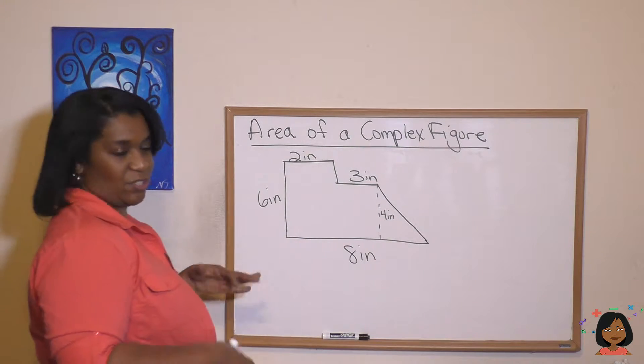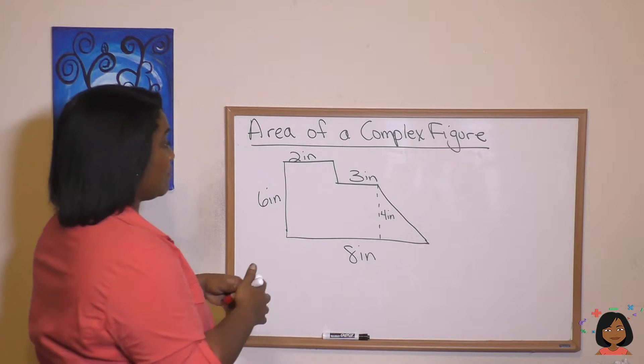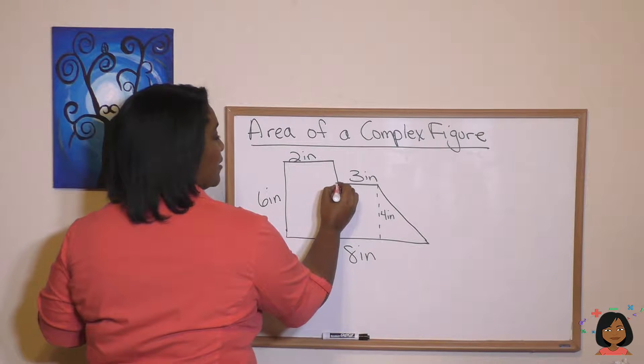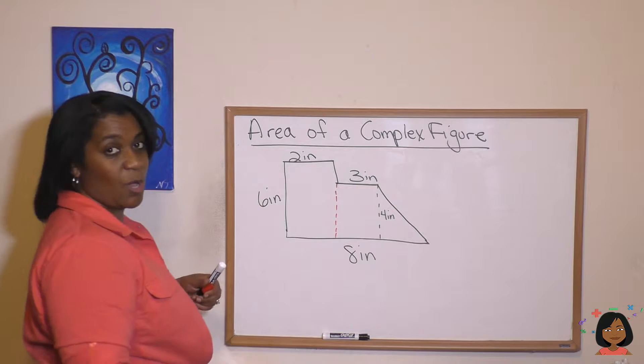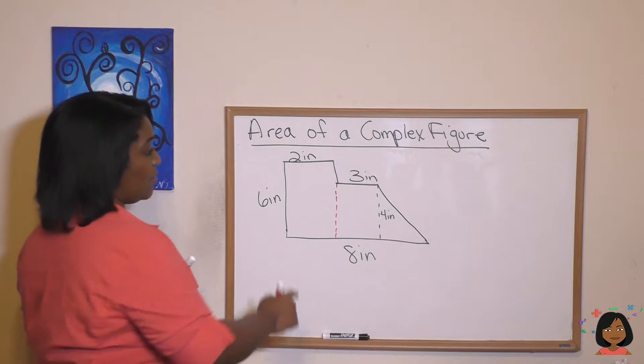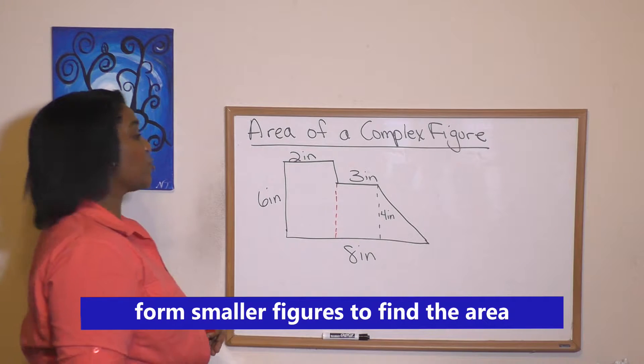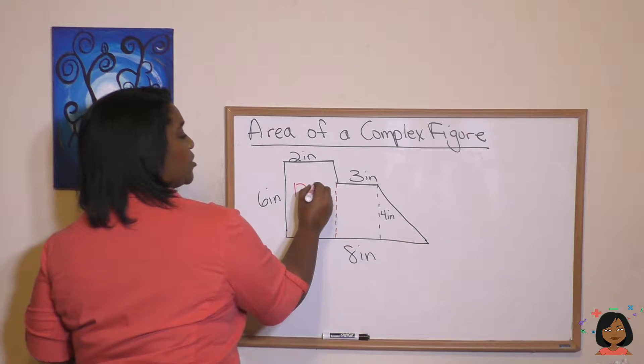So in this figure, it's a complex figure. I see some smaller figures in it. Notice, I see this is a rectangle right here. And we know that the area of a rectangle is length times width. So we can find the area of this first rectangle. Six times two is 12 inches squared.